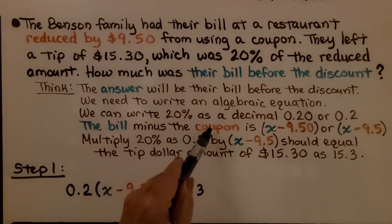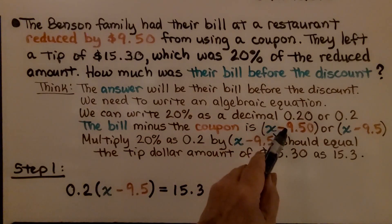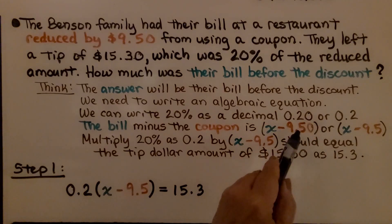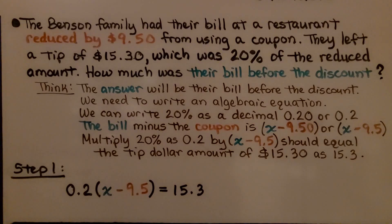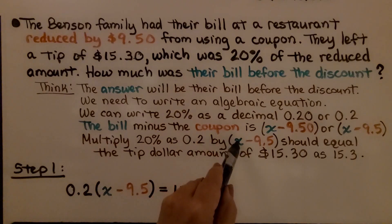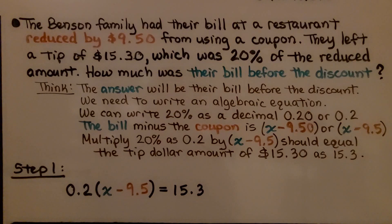The bill minus the coupon is x minus 9.50. We multiply the 20% as 0.2 by the x minus 9.5 and it should equal the tip dollar amount of $15.30. So for step one, writing the equation, we have 0.2 times x minus 9.5 is equal to 15.3.